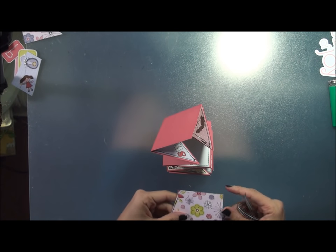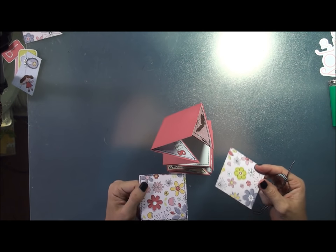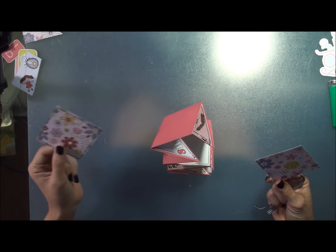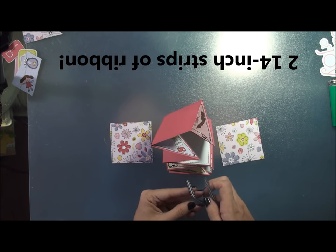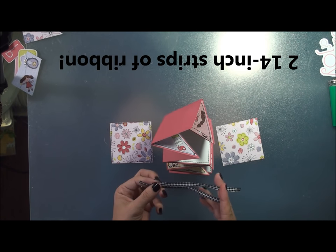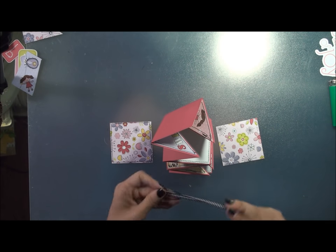Alright next you're going to want to cut two more squares. You can use cardstock or pattern paper or whatever you want to do. These are going to be your front and back cover. And I cut these the same size as my inside frames or my photo mats. And then I also cut two strips of ribbon. They're about five to six inches long.